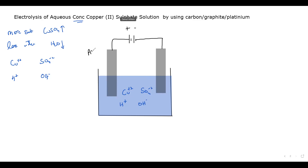We then dip the electrodes, which are made of graphite or platinum. We connect the battery. The electrode connected to the positive terminal is called the anode, and the electrode connected to the negative terminal is called the cathode. When we switch on the supply, electrons will come out from the negative terminal and move towards the cathode.